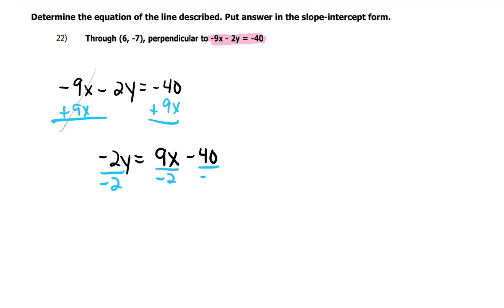And then I'm going to divide off the negative 2. But I have to distribute it on the right. And of course, negative 2 over negative 2 cancels. And so I get y equals... It's a positive 9 divided by a negative 2. So it's going to be a negative. Positive divided by a negative is a negative.